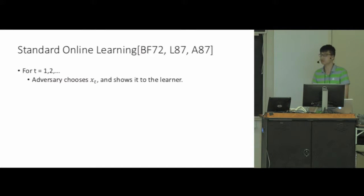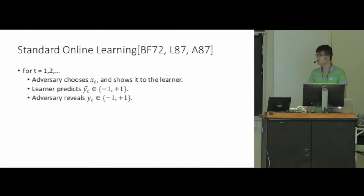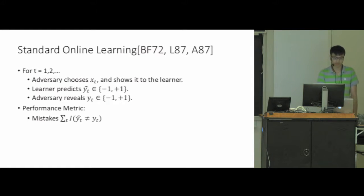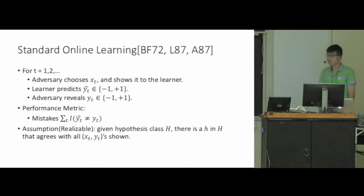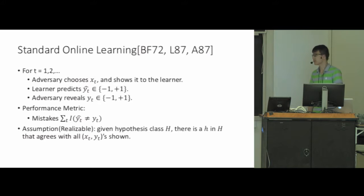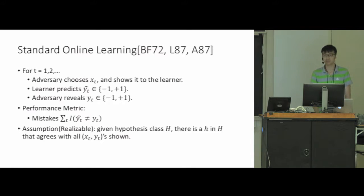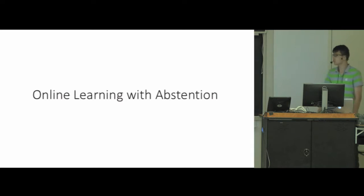In standard online learning it follows this interaction paradigm: the adversary chooses an example and shows it to the learner, the learner predicts a binary label, then the adversary reveals the underlying label. The performance metric is the number of mistakes made cumulatively. We make the realizability assumption: given a hypothesis class, there is some classifier in that class that agrees with all examples shown.